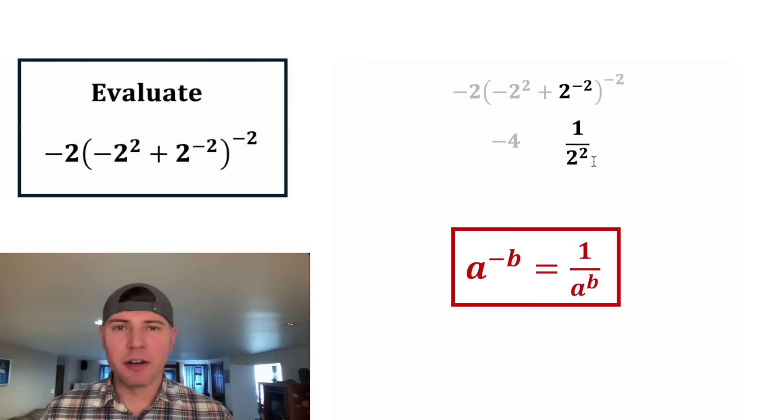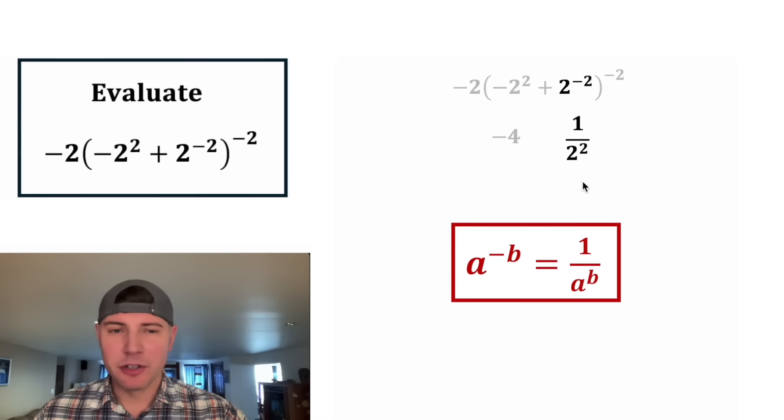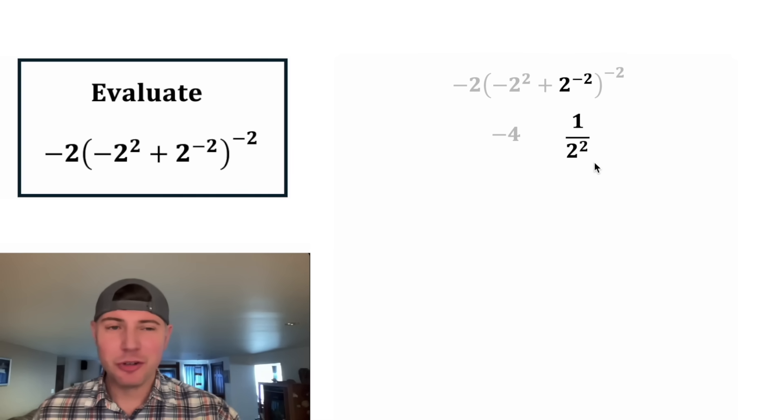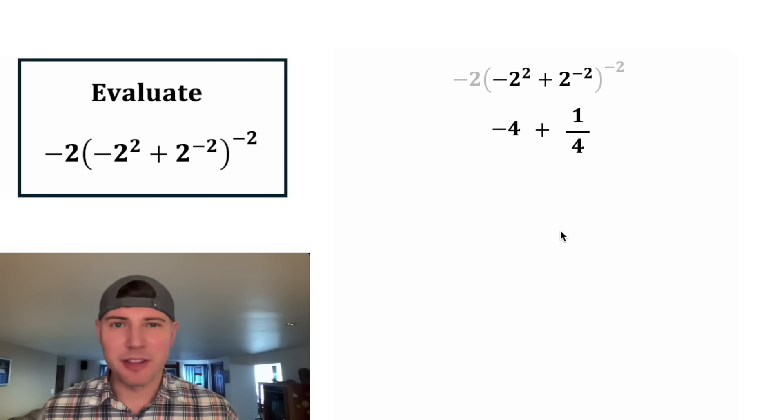A to the negative b is equal to one over a to the b. So two to the negative two is equal to one over two to the two. And two to the two or two squared is equal to four.